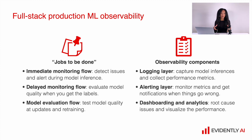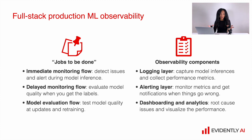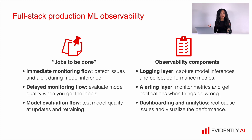We also discussed full stack production machine learning observability. There are quite a lot of jobs to be done. It's essential to implement an immediate monitoring flow because it helps you to detect issues and alert during model inference — if you have a production-critical service, it's essential to implement. We also discussed the delayed monitoring flow because quite often we deal with models that have delayed ground truth. In this case, we need a flow that will wait until we get labeled data and then trigger the calculations, so we know how to evaluate model quality when you get the labels. Finally, we discussed the model evaluation flow because it's important to test model quality and data quality after updates and retraining.